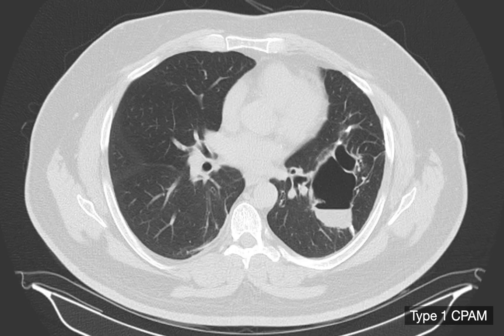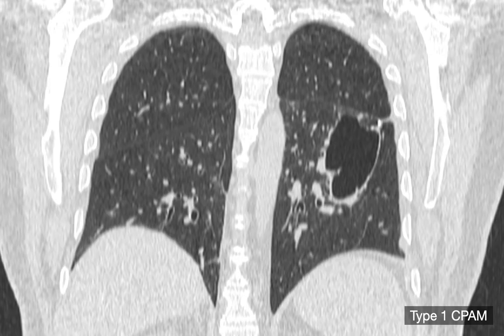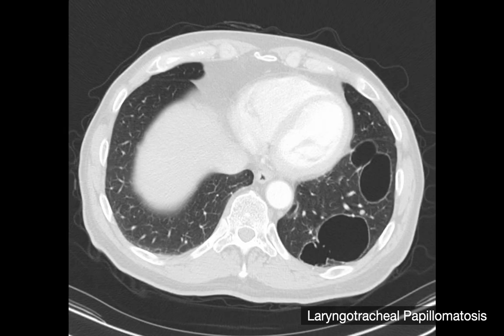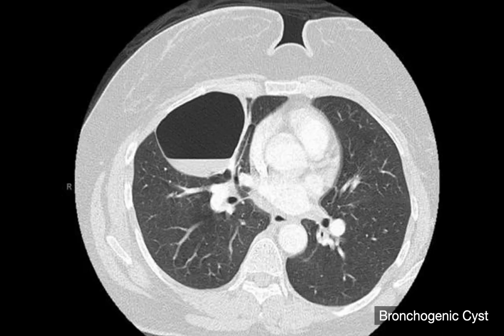Other types of CPAMs, like type 1 CPAMs, are not specific because there are other things that look just like these. Here's an example of a type 1 CPAM where the cyst size is much larger. They tend to present with at least one large cystic area. The problem is there are many other diagnoses that can look just like these — examples include laryngotracheal papillomatosis and bronchogenic cysts. So type 1 CPAMs are not considered a specifically presenting mass; type 2s can be.